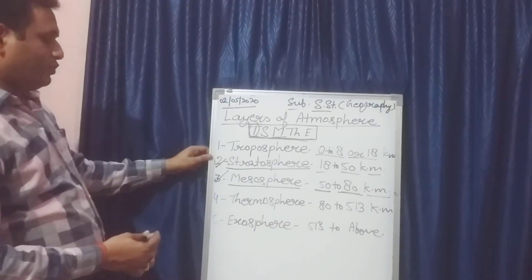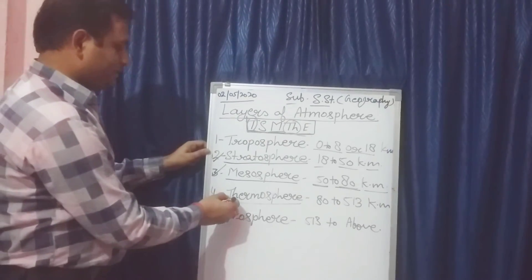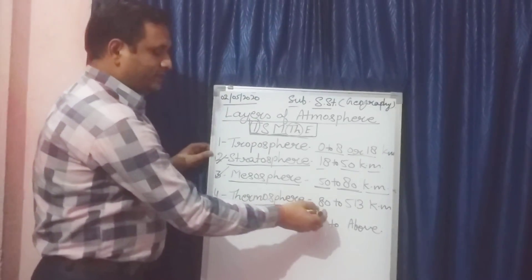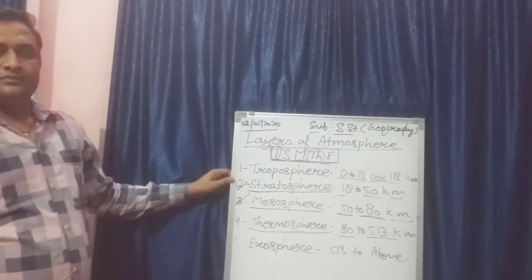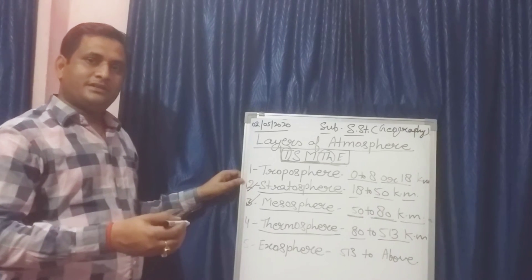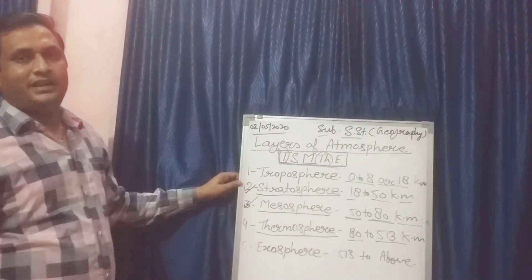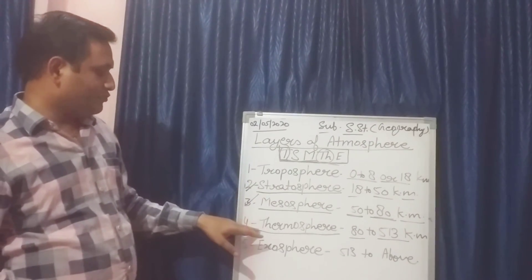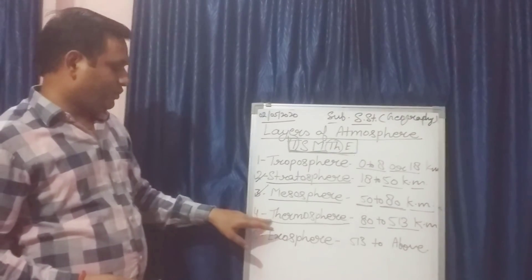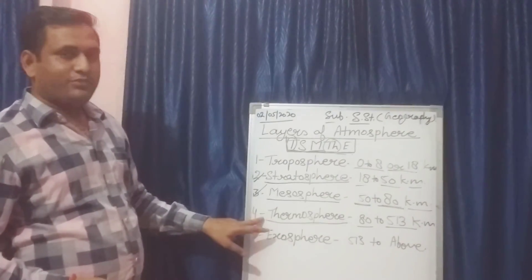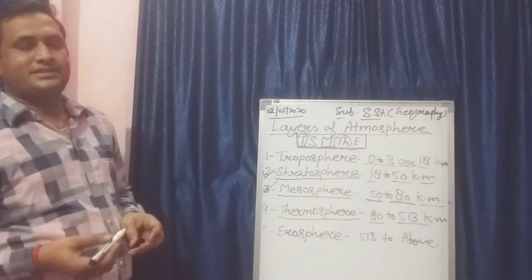The fourth layer is TH — Thermosphere. Thermosphere is from 80 kilometers to 513 kilometers. Satellites and other scientific activities are mostly used in the Thermosphere. This layer is very important for scientific discoveries.